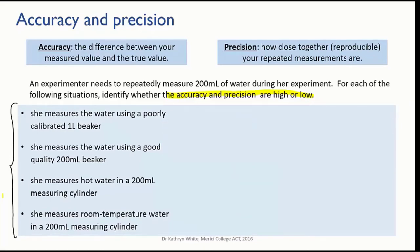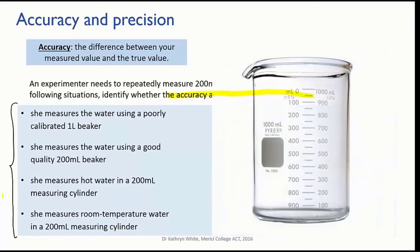Okay, so let's go through them. In the first situation, she uses a 1 litre beaker to measure her 200 mils, and it's a cheap, poorly calibrated one at that.